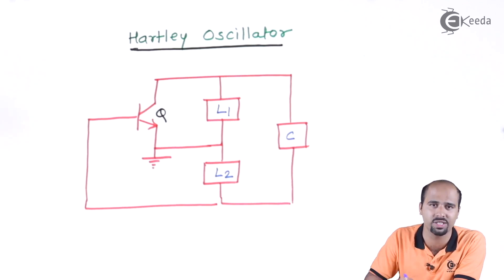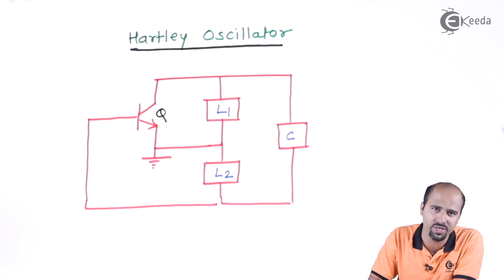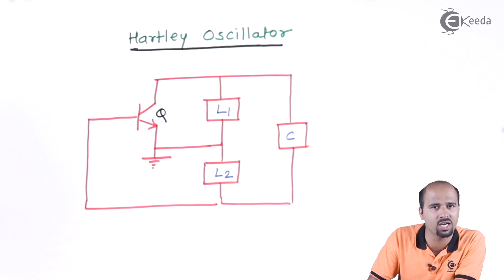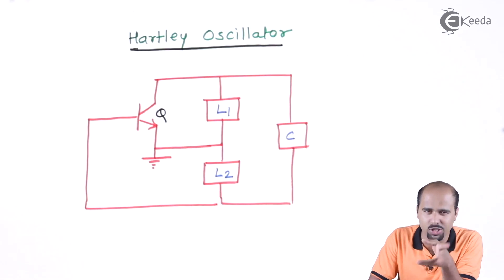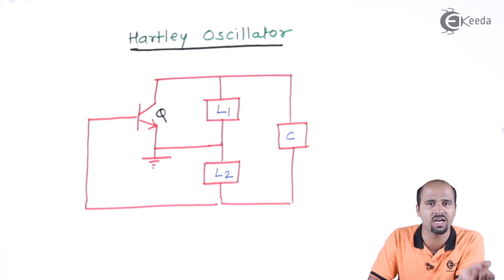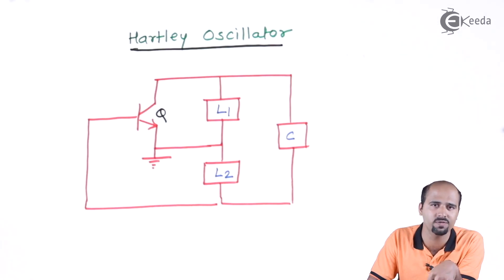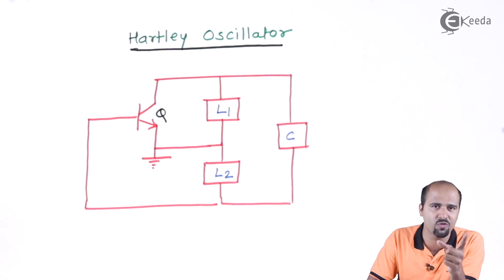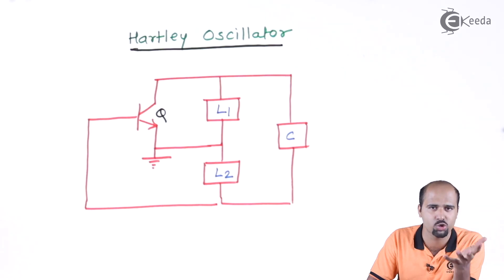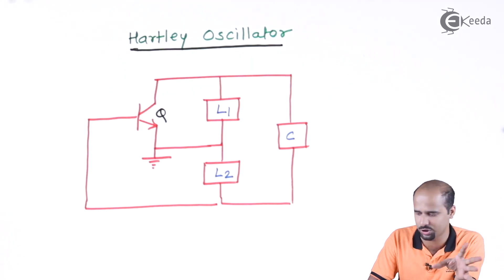There is always confusion about whether Colpitts or Hartley uses two inductors. To avoid that confusion: H for Hartley, H for Henry, and Henry is the unit of inductors — so Hartley has two inductors. C for Colpitts, C for capacitor — so Colpitts has two capacitors. This is how you can avoid the confusion.